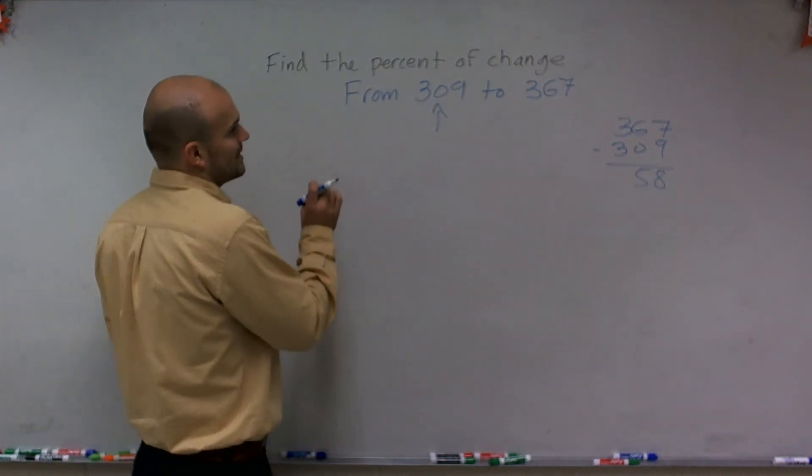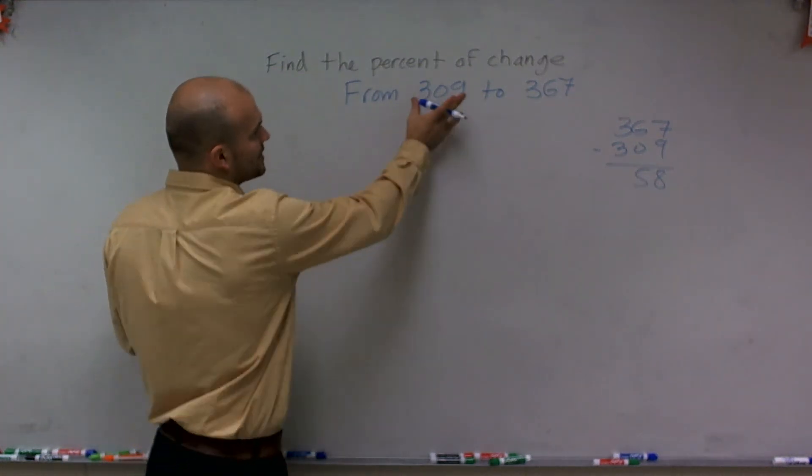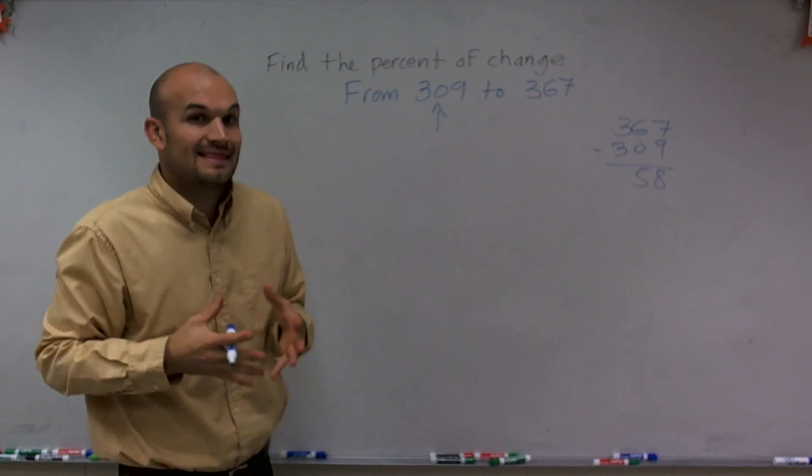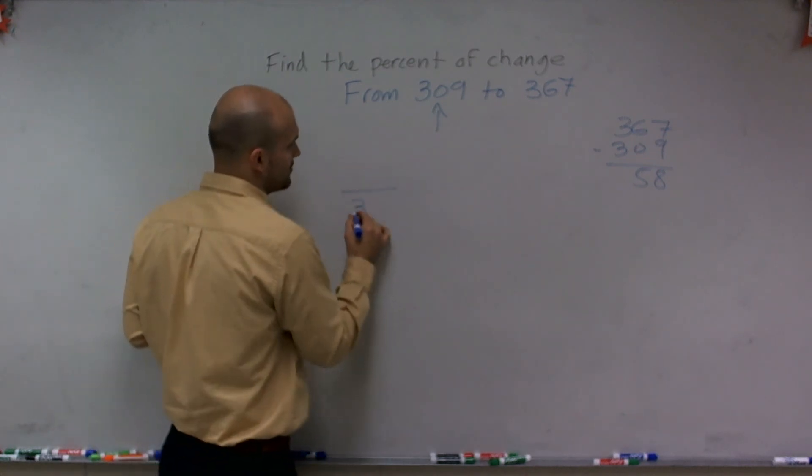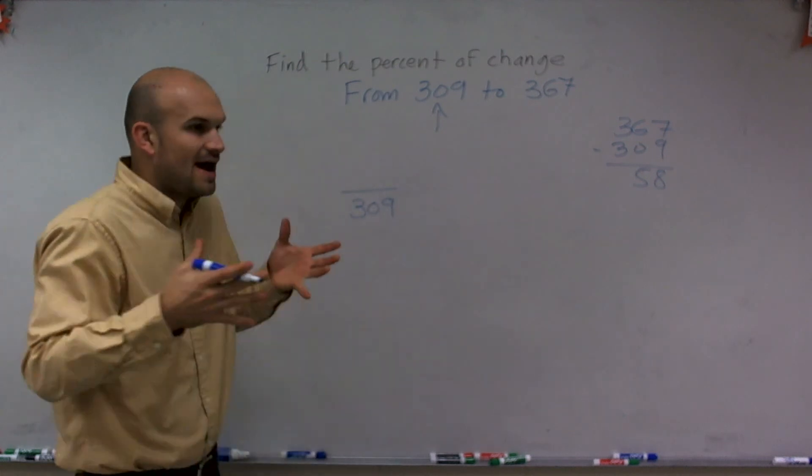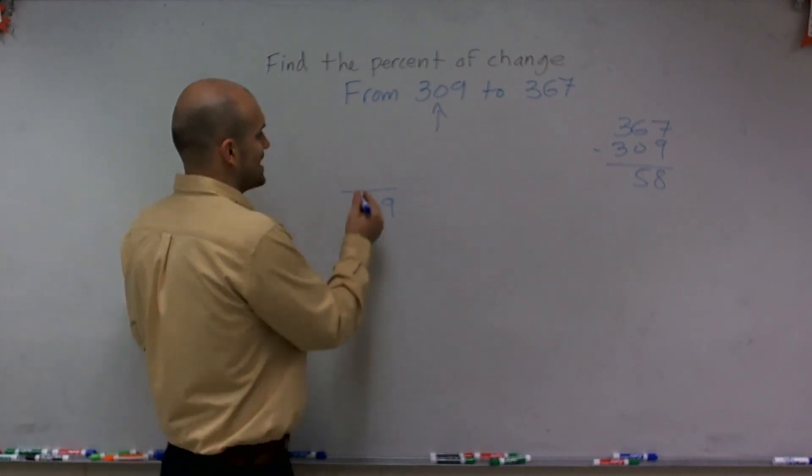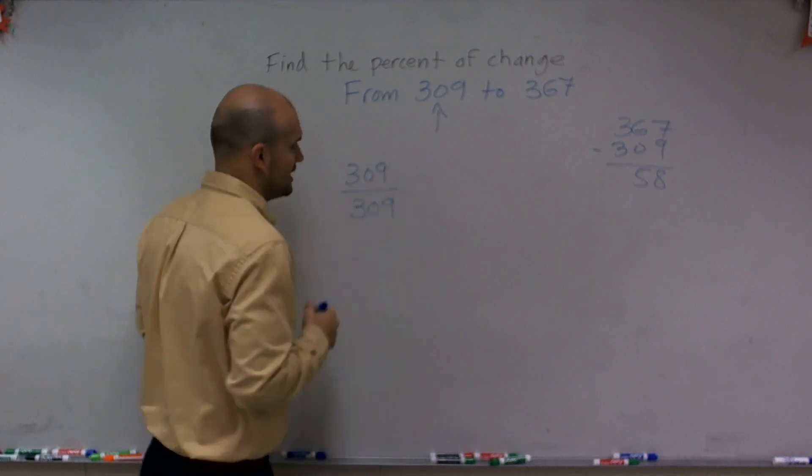So let's take a look at our initial point. So we have 309. That's going to be our total amount. So if I'm going to create a fraction with 309, if I had 100% or all of my units, I would have 309 over 309.